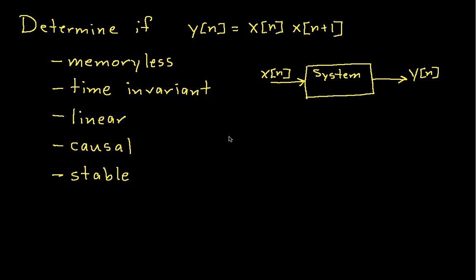Let's begin with memoryless. In order to be memoryless, a system's output at time n has to depend only on its input at time n. We can see from the equation that the output at time n depends on the input at time n as well as the input at time n plus 1. So this is not a memoryless system.